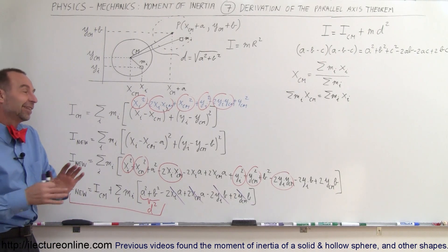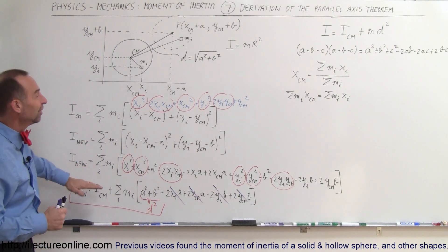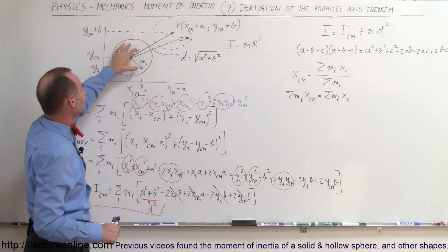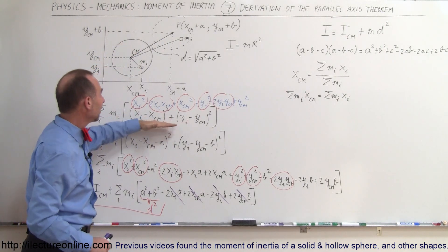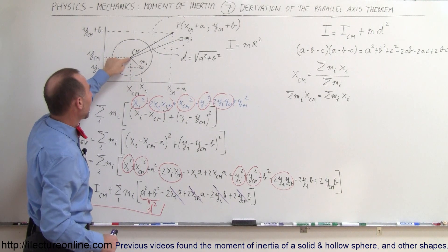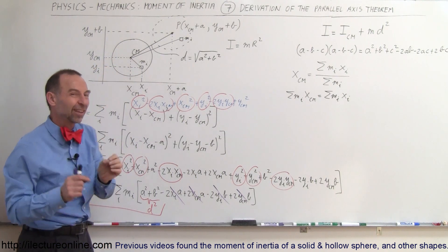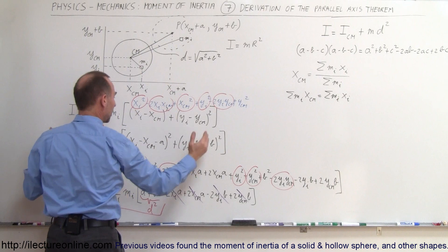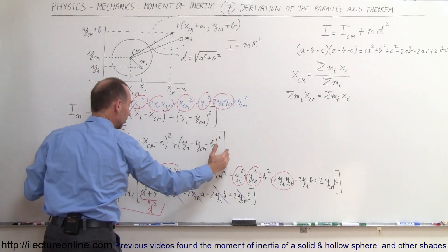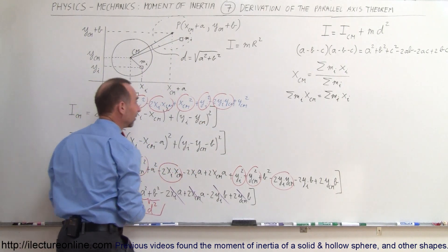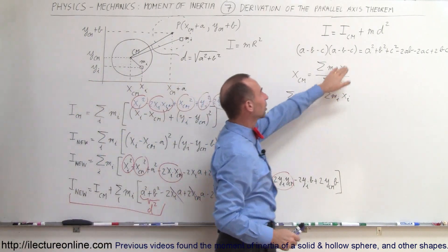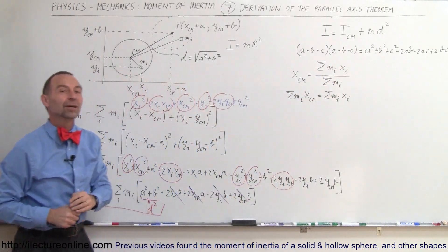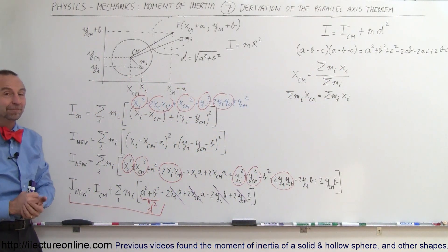So that's where the parallel axis theorem comes from. It takes a little algebra, but it can be derived by defining the moment of inertia when the axis of rotation is at the center of mass, moving it to a new location, and reducing the resulting equation. And that's how it's done.